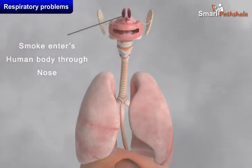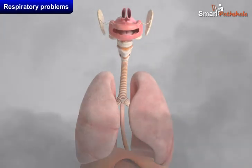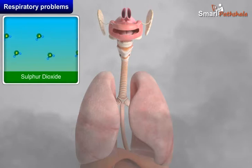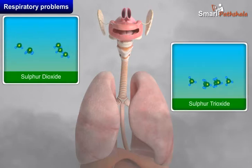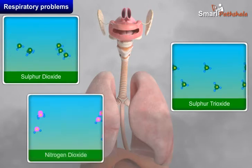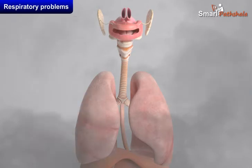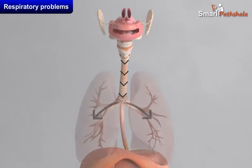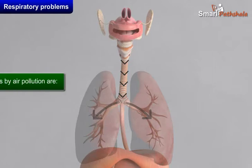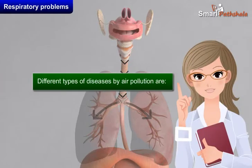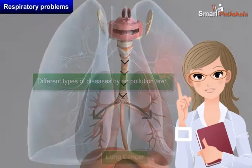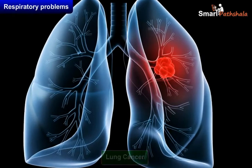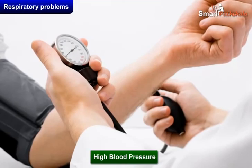When we inhale the particulate matter and gas pollutants from air, such as sulphur dioxide, sulphur trioxide, and nitrogen dioxide, these particles enter into the lungs through either the mouth or nose, which damages the bronchial tubes and leads to different types of diseases such as lung cancer, asthma, and high blood pressure.